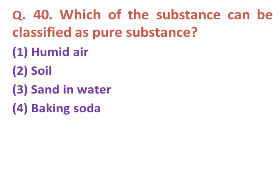Question forty: Which of the following substances can be classified as a buffer substance? Option one: humid air. Option two: soil. Option three: sand in water. Option four: baking soda. The correct answer is option four — baking soda is a buffer substance compared to the other three.